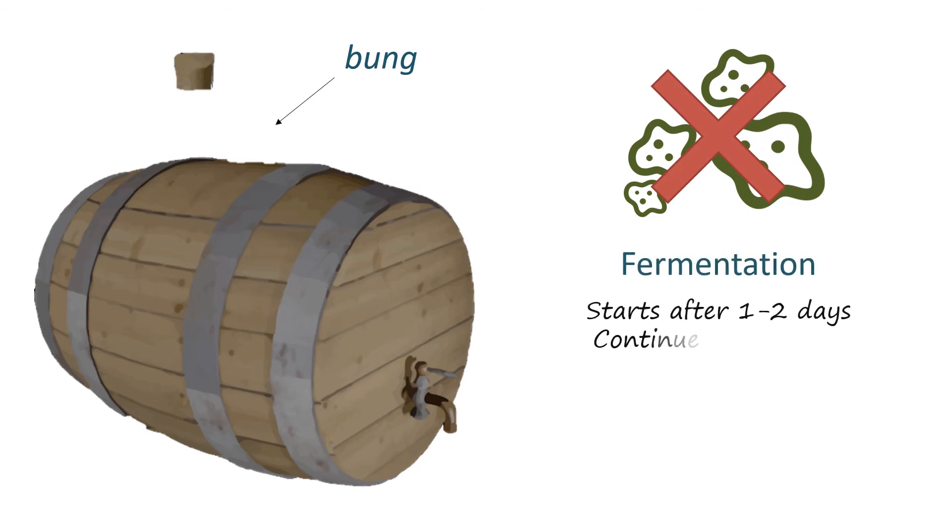No yeast is added as traditional cider making relies on wild yeast. Fermentation starts within one to two days and continues for several weeks, during which time the barrel is topped up with more cider. When fermentation is complete, the bung is replaced and the cider is left to mature for five to six months.